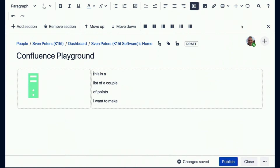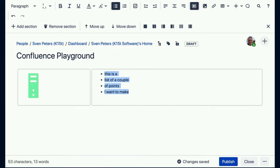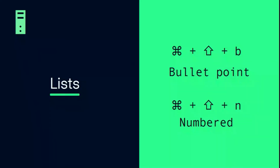What if you want to convert a list into a bullet point list? Just highlight the list and press Command Shift B — that turns it into a bullet point list. Command Shift N turns it into a numbered list. For cloud folks, it's Command Shift Eight for bullet lists and Command Shift Seven for numbered lists.